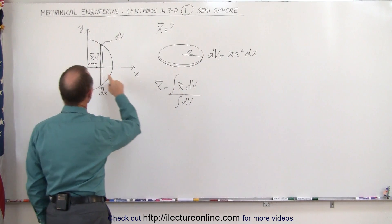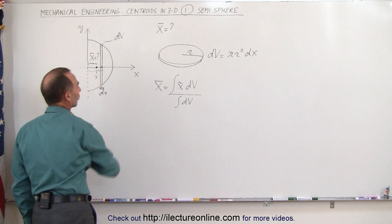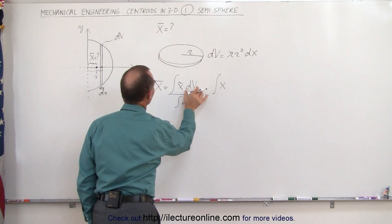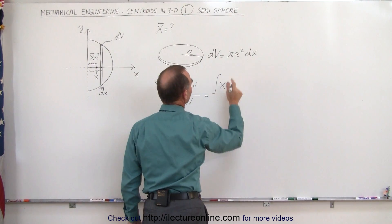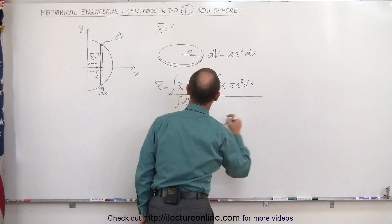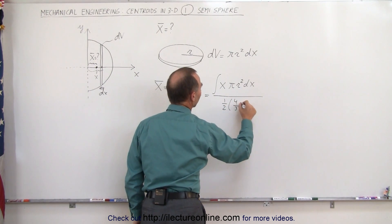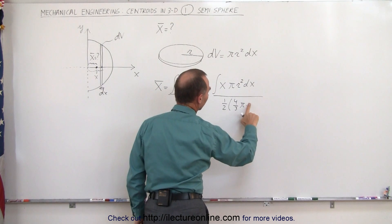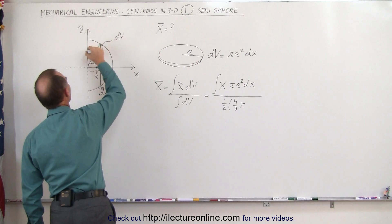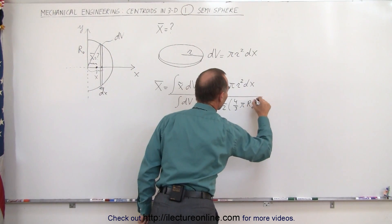You can see that the distance to the centroid of that small little volume is a distance x away from the origin. So this can be written as the integral of x times dv, where dv is π r squared times dx. We divide that by half the volume of the sphere, which is one-half times four-thirds π r-naught cubed — let's call the radius of the sphere r-naught, so that's r-naught cubed in the denominator.